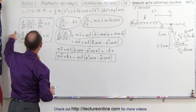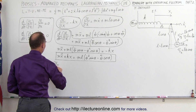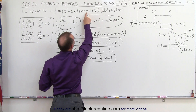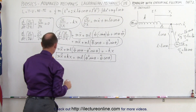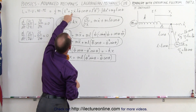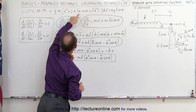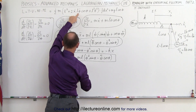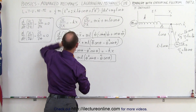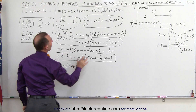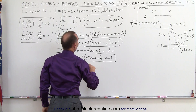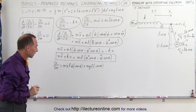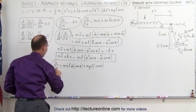Next we use the second Euler-Lagrange equation. First we find the partial of the Lagrangian with respect to theta. Going back to the original expression, we're looking for theta terms — there's a theta here and a theta there; everything else becomes zero. Taking those derivatives: one-half times two is one, giving us m x-dot l theta-dot times the derivative of cosine with respect to theta, which is negative sine of theta. And we have a second term: plus m g l times the derivative of cosine, which is negative sine of theta.